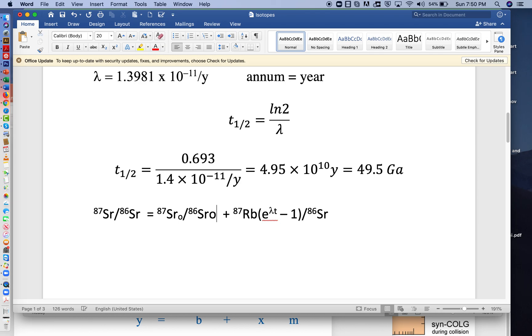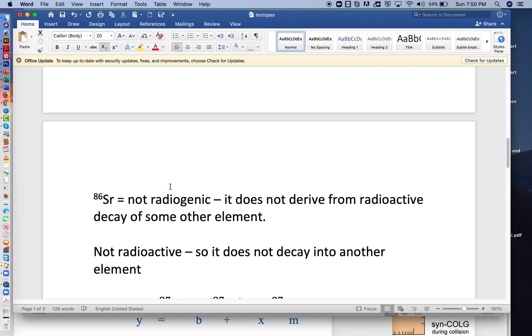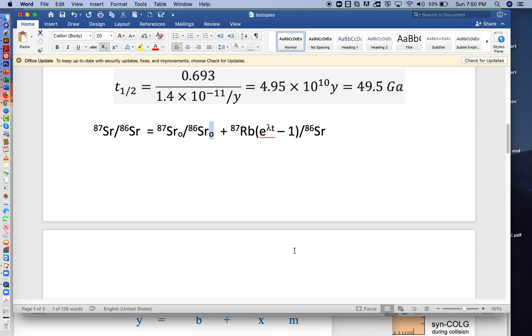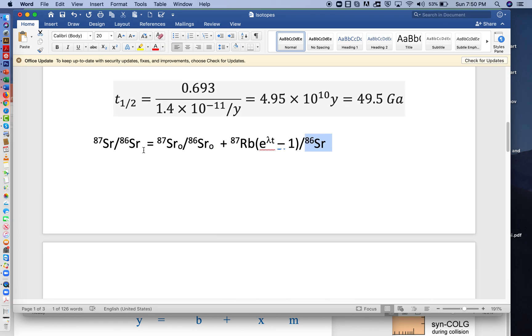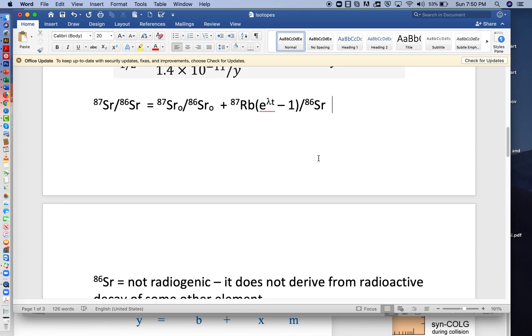Strontium-86 is special: it is not radiogenic and not radioactive. Not radiogenic means it doesn't derive from radioactive decay of another element; not radioactive means it doesn't decay into anything else. This is a constant. We've divided both sides by strontium-86, and we'll use that ratio in the next part of this lecture when we look at how to apply this to age-date granitic rocks.